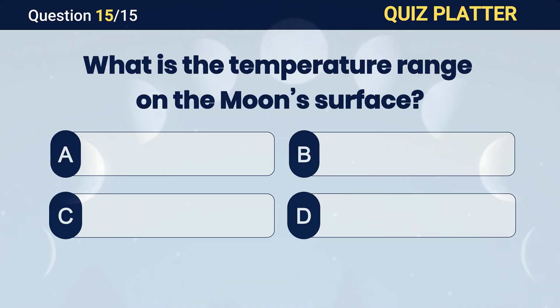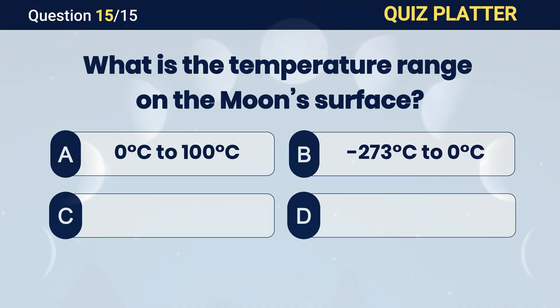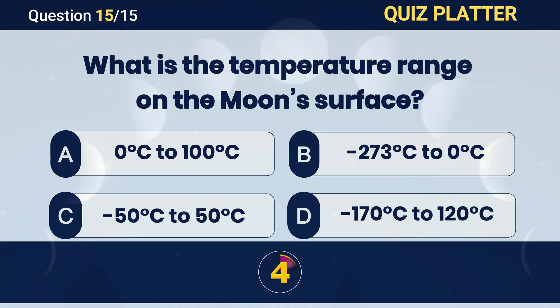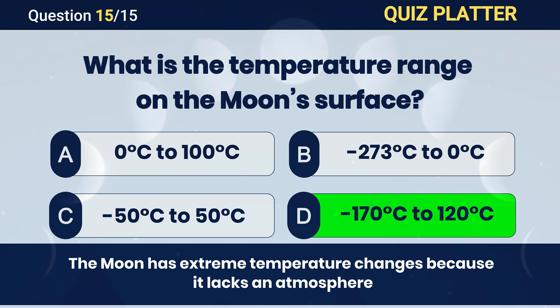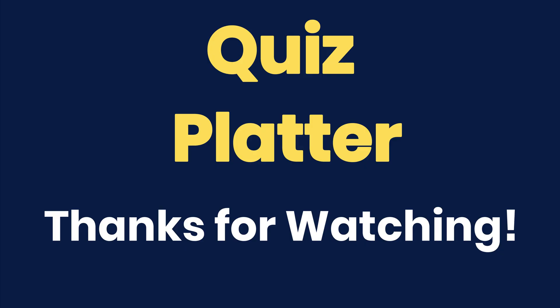What is the temperature range on the Moon's surface? Answer D. Minus 170 degrees Celsius to 120 degrees Celsius.